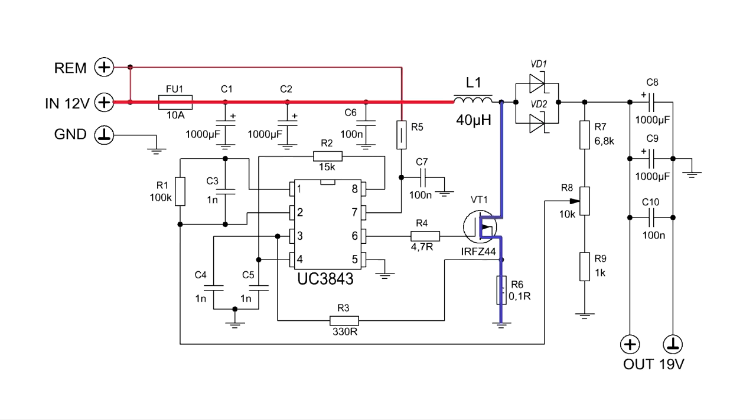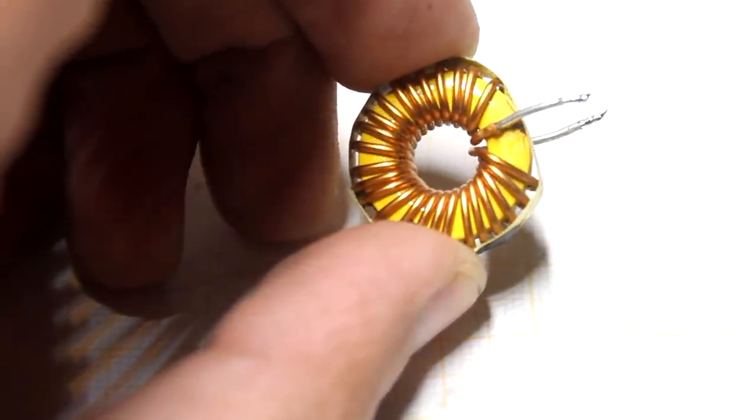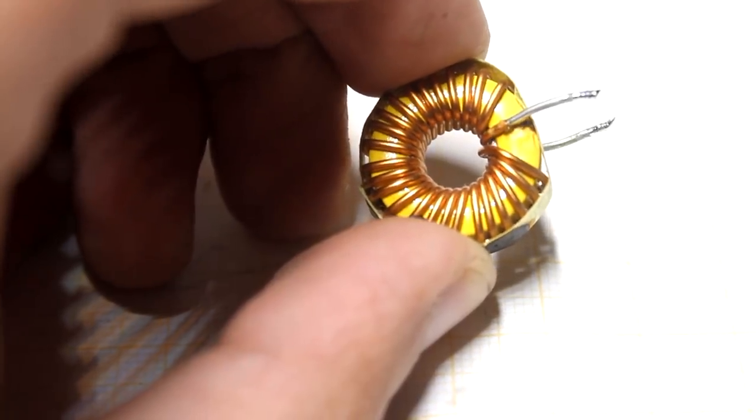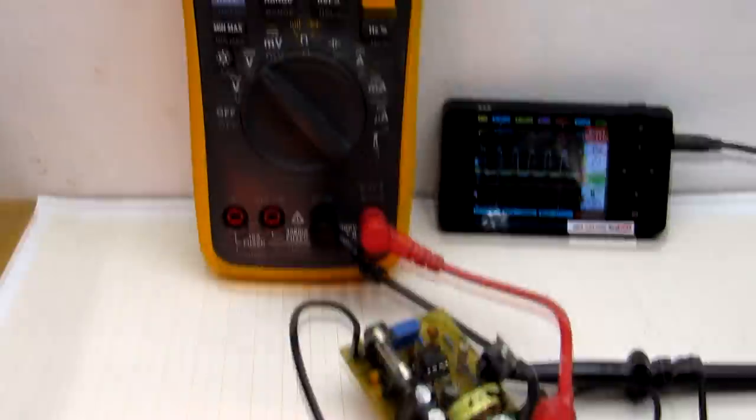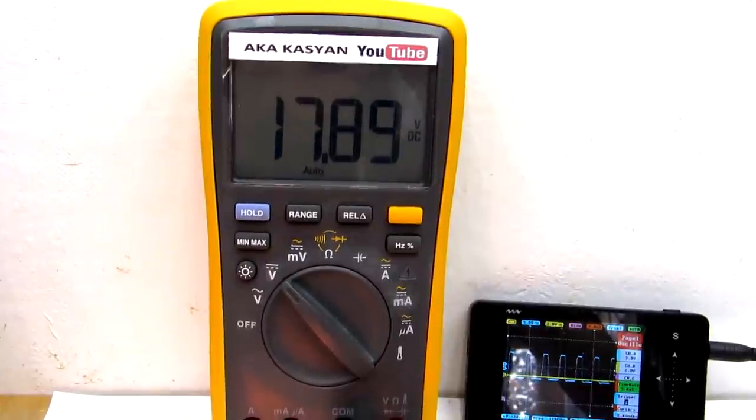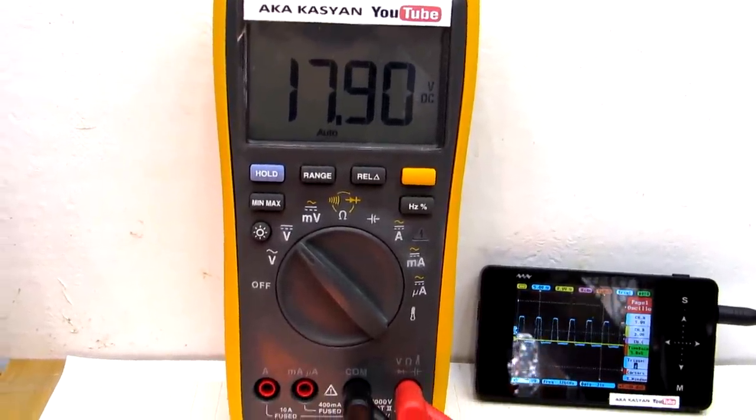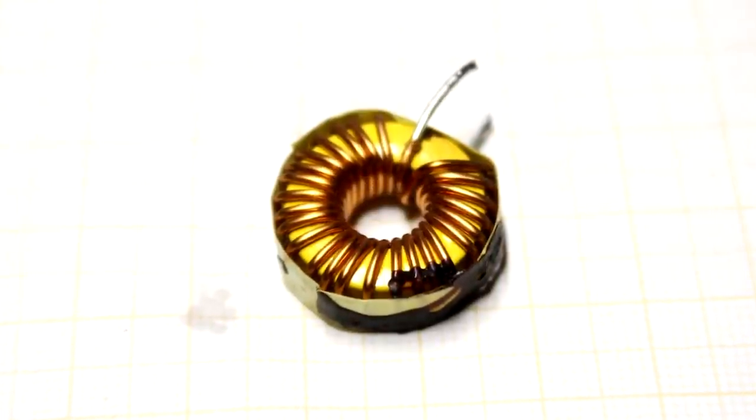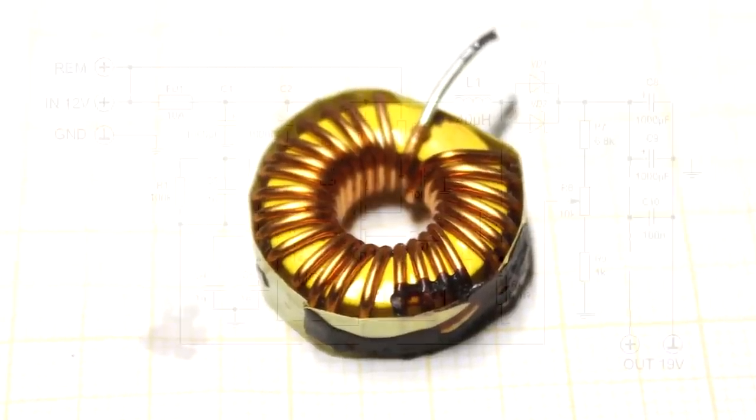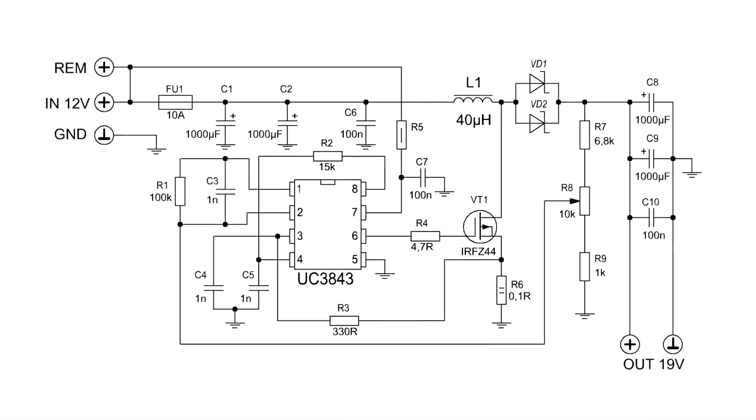When a transistor is open some energy accumulates in the choke and after this when the transistor is closed the choke gives off the stored energy. This phenomenon is called self-induction which is characteristic of any inductive loads. It is important to note that the voltage of self-induction can exceed the supply voltage at times or even 10 times. It all depends on the inductance of a particular choke.